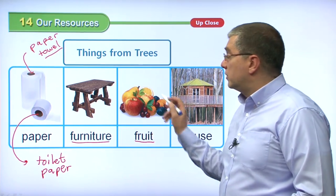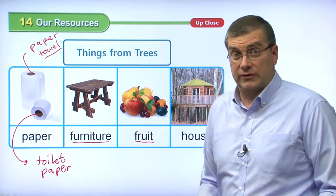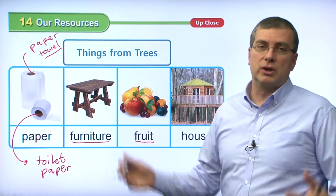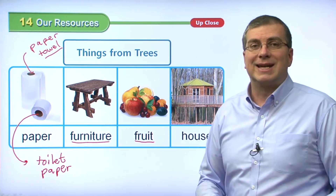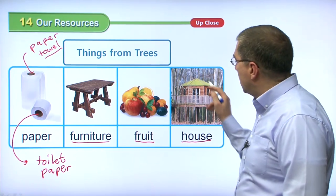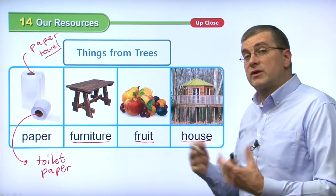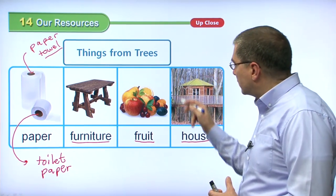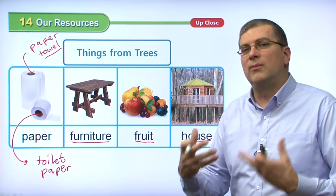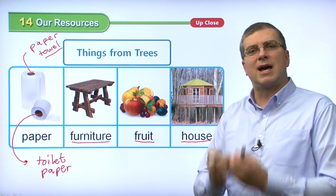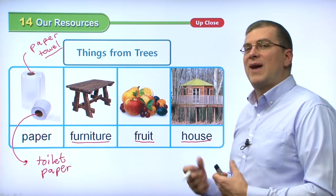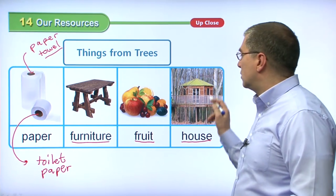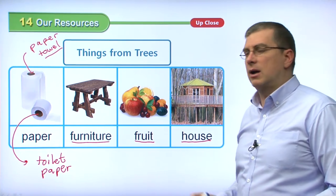Also, fruit — we get fruit from trees. That's an important natural resource; it's food that comes from nature. Many types of fruit come from trees: apple trees, cherry trees, plum trees, orange trees — all of these give us fruit. And as mentioned, we can build houses with wood. Most common construction is probably concrete, but a house made of wood has a nice warm feeling. Some houses are made entirely of wood, but they are a little bit dangerous because wooden houses can burn — be careful with fire in a wooden house.